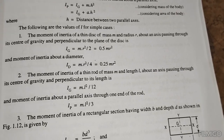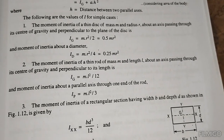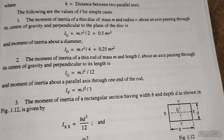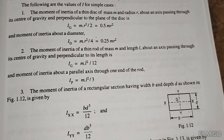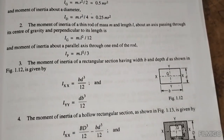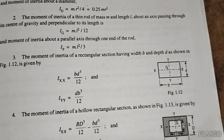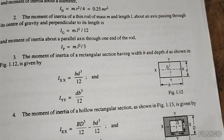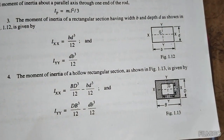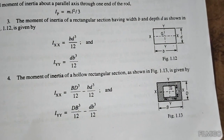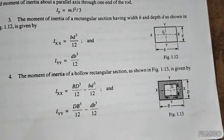For a thin rod: I_G equals m L squared divided by 12, and about one end equals m L squared divided by 3. For a rectangular cross section: I_xx equals b d cubed divided by 12, and I_yy equals d b cubed divided by 12. For a hollow rectangular section: I equals B D cubed divided by 12 minus b d cubed divided by 12.